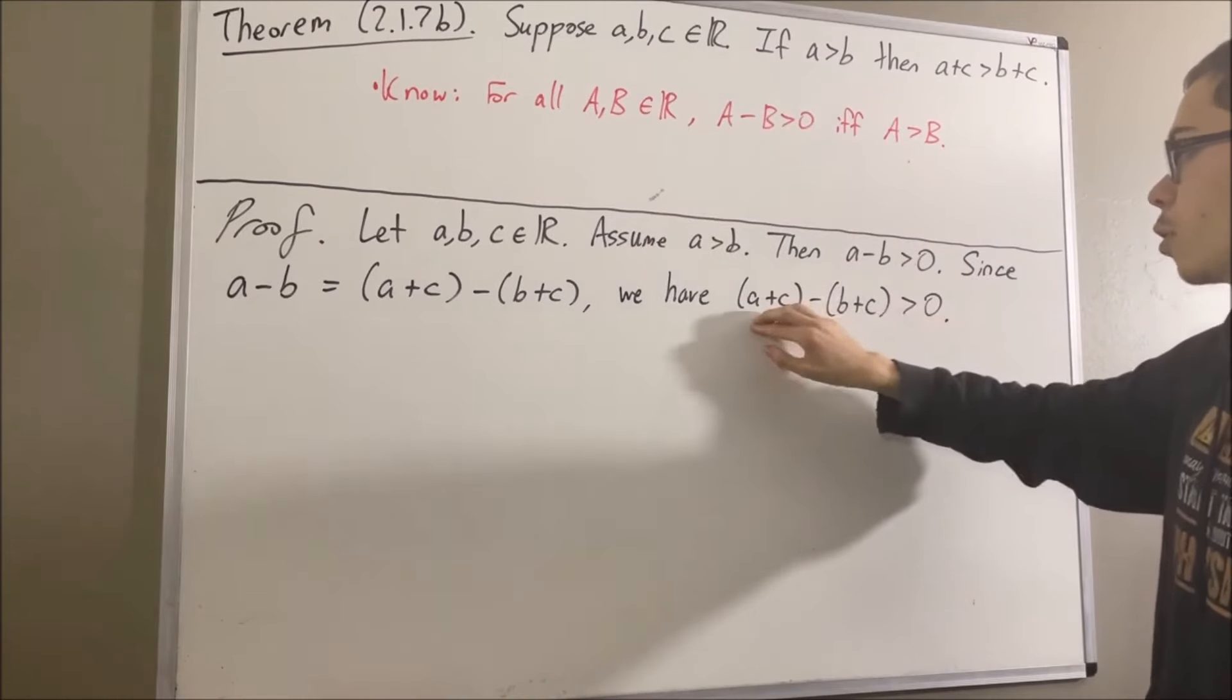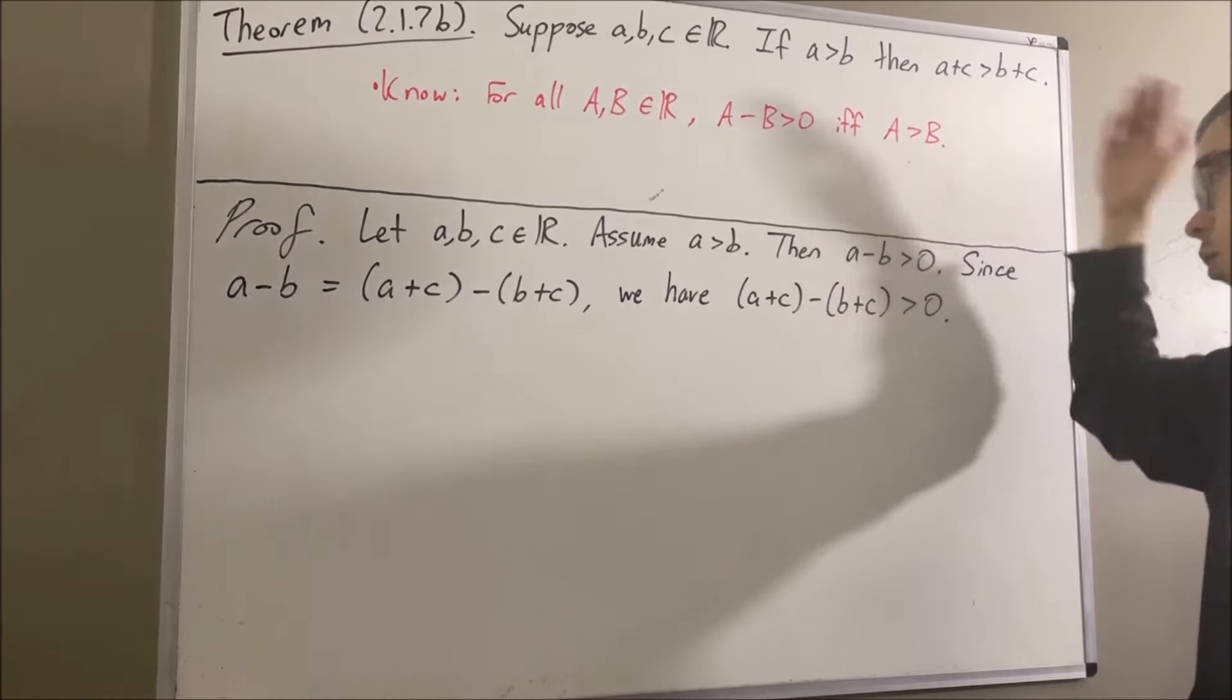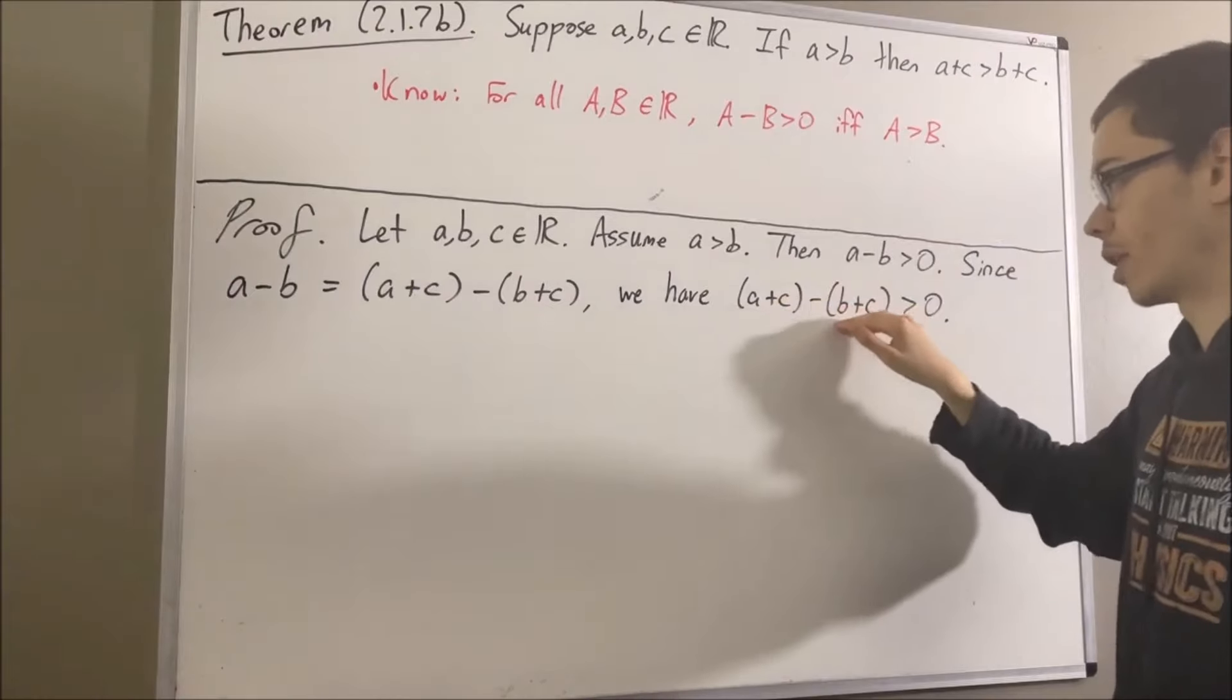And so, since capital A minus capital B is greater than zero, it follows that capital A is greater than capital B, or in this case, A plus C is greater than B plus C.